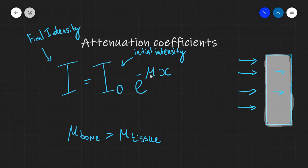For instance, bone is a better absorber of x-rays than soft tissue. So bone has a larger value of the attenuation coefficient than soft tissue. Let's write this down over here. This term is the attenuation coefficient, which can also be known as the absorption coefficient.